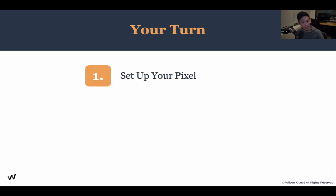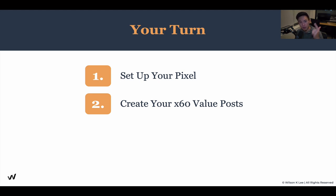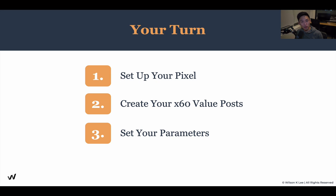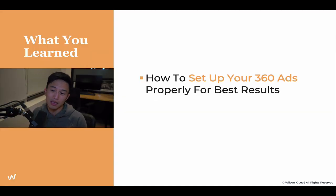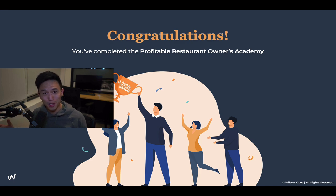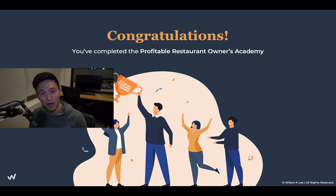Now it is your turn. Set up your pixel first — even if you have no intent on running advertisements, set up your pixel. Next, create your 60 value posts based on the seven P's. It might seem like a lot but it really isn't — you just need to type it out or record it from your cell phone. Production quality does not need to be high because it's all about being authentic, and that drives trust. Then set your parameters: cold audience, warm audience, duration, and budget. Download the worksheet below with all the resources you need. You just learned how to set up your 360 ads for the best results — this is truly your ticket to financial freedom. Congratulations and thank you so much for completing the Pro Academy. I'm super proud of you.